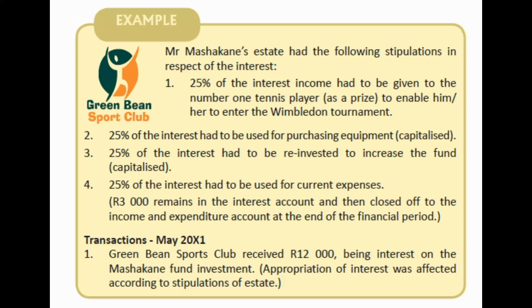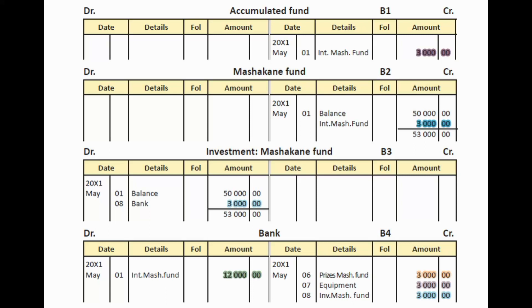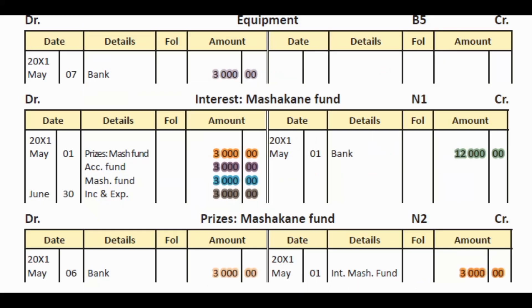The first transaction in May: Green Bean Sports Club received $12,000 being interest on the Mashakani fund investment. Appropriation of the interest was effected according to the stipulations of the estate. The double entry for receiving the interest is: debit bank and credit interest Mashakani fund. You'll see that highlighted in green — debit bank, credit interest Mashakani fund, which is a nominal account — $12,000 on the credit side.